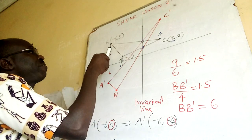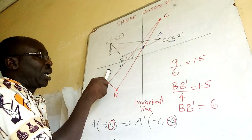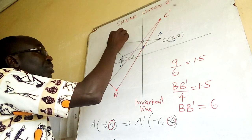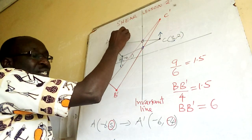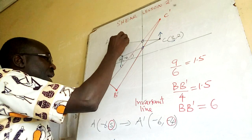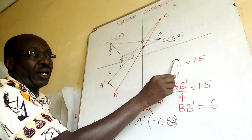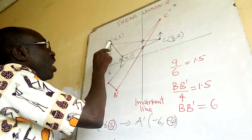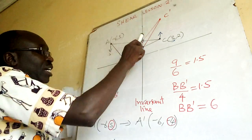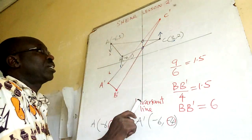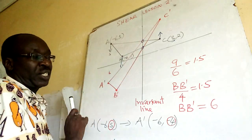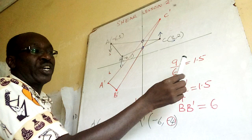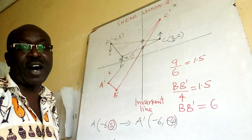From A to A prime, there are five steps here and four steps there, so the total number of steps parallel to the y-axis are nine. Then, how far is A from the invariant line? It is six steps. So you get scale factor 1.5.